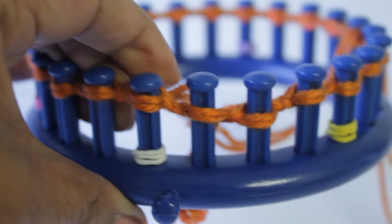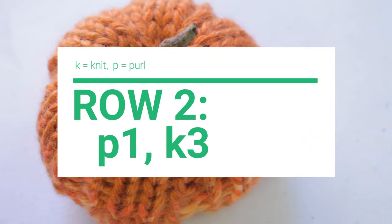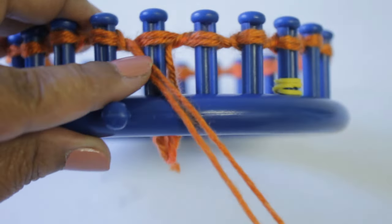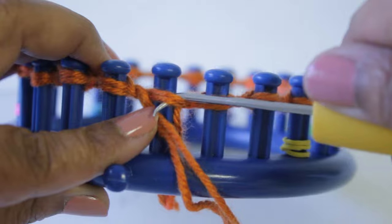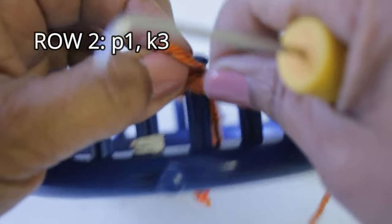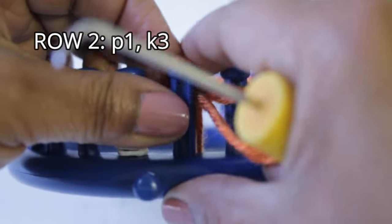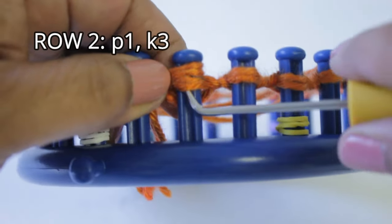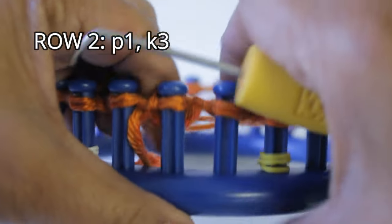Now we're ready for row two where you're going to do a purl one, knit three pattern repeat. To create a purl, just put your yarn underneath the existing loop from the top. Take your hook, scoop up and create a new loop. Take the old loop off, put the new loop on the peg and pull your working yarn. That was your purl one and here are your three knit stitches.